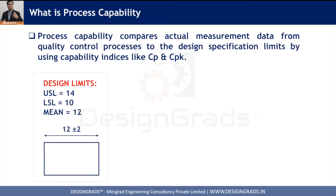Once we prepare the drawing and give it to a supplier, it is the supplier's responsibility to meet these specifications using different manufacturing processes. It's very important to understand the capability of that process to manufacture the part within the specification limits not just for a small sample, but in a longer production run — that's why a process capability study is done.